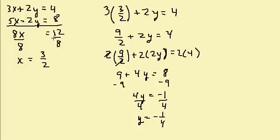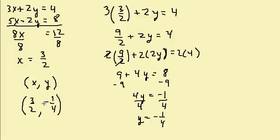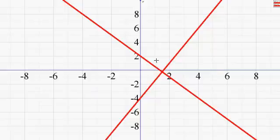So my solution is (3/2, −1/4). Our solution is a point — it's where the two lines intersect — written as an (x, y) coordinate. Let's take a look at the graph of these two lines. You can see this point where they intersect is 3 halves, negative one-fourth, right here.